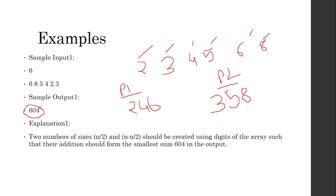So first you sort the array, then divide it into two equal parts and place numbers in alternating fashion: the first number goes into part one, the second into part two, the third into part one at the second position, the fourth into part two at the second position, and so on. At the end, adding these two numbers gives you 604.